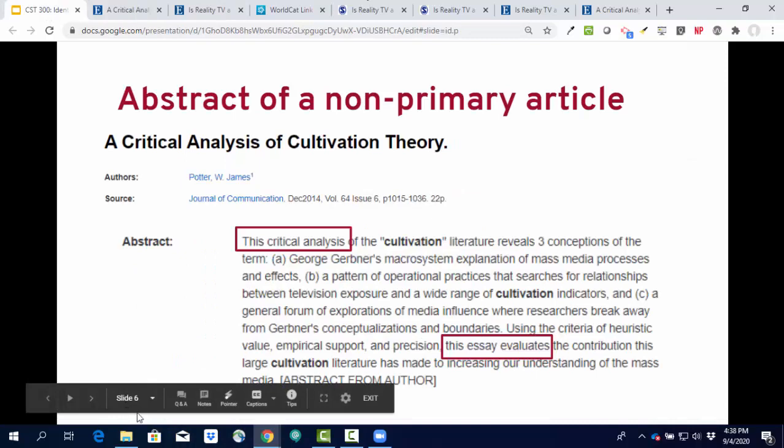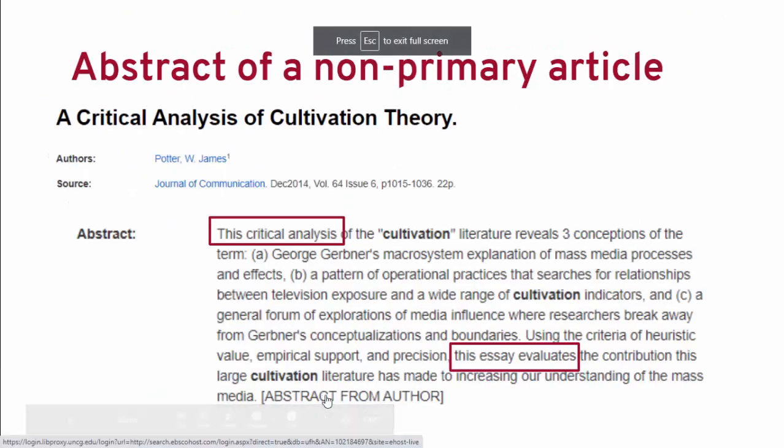This distinction takes practice. You won't immediately be able to distinguish between a primary and a non-primary research article when looking at communication studies literature. You can always contact me — my email is jedale2 at uncg.edu — or talk to your professor. This is not innate knowledge; it takes time and practice to feel comfortable identifying these kinds of sources. Our next video in this series will be about finding books and book chapters, and then we'll move into a video focused on finding primary research articles. Hopefully now you feel more comfortable identifying them. I'll see you in the next video.